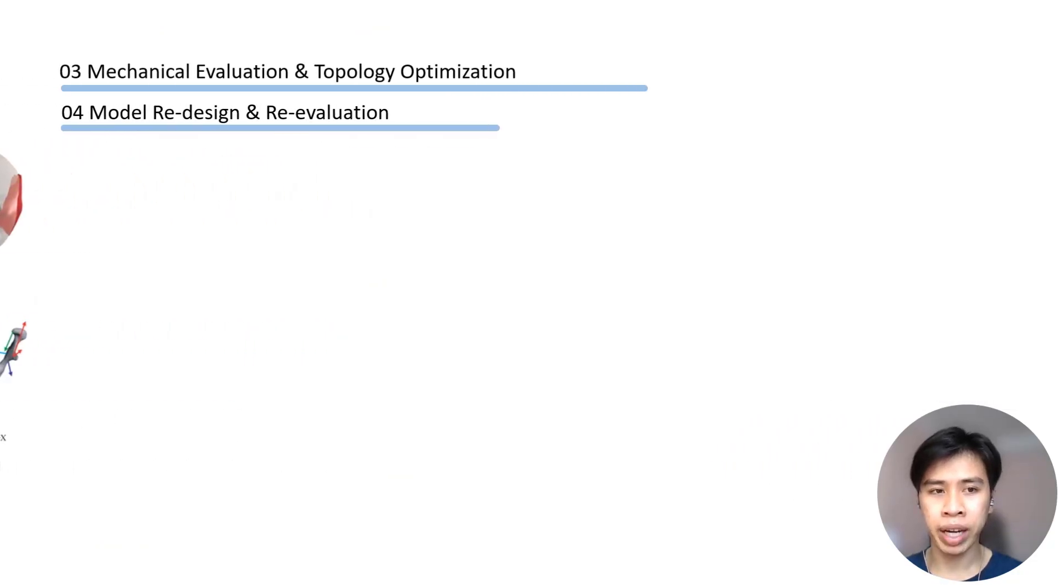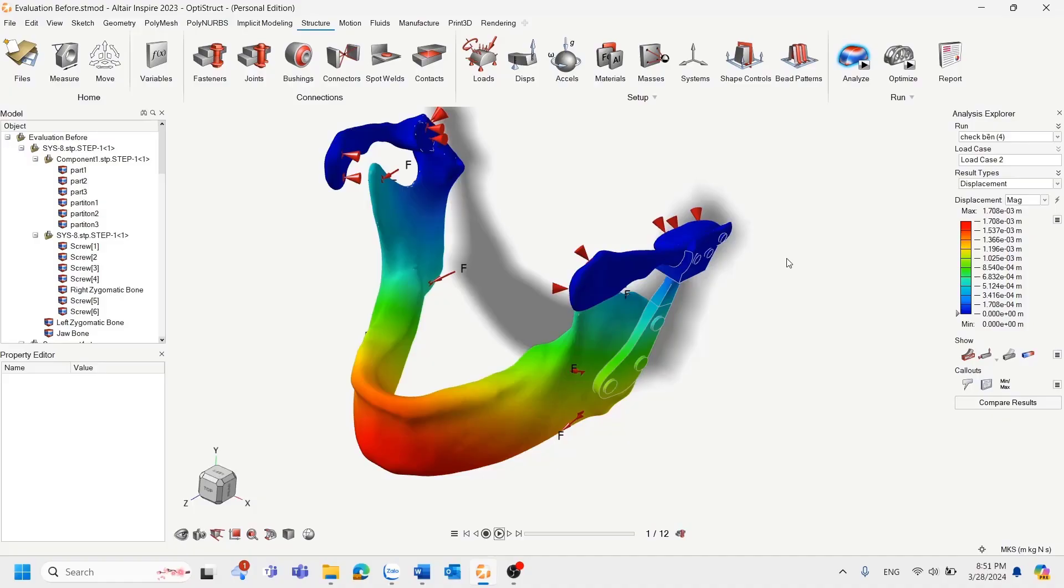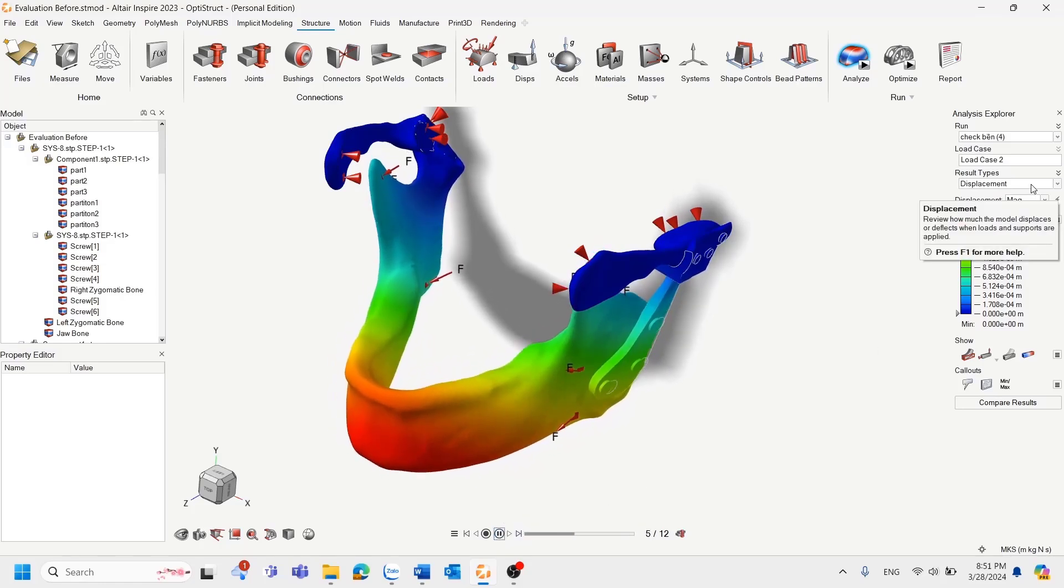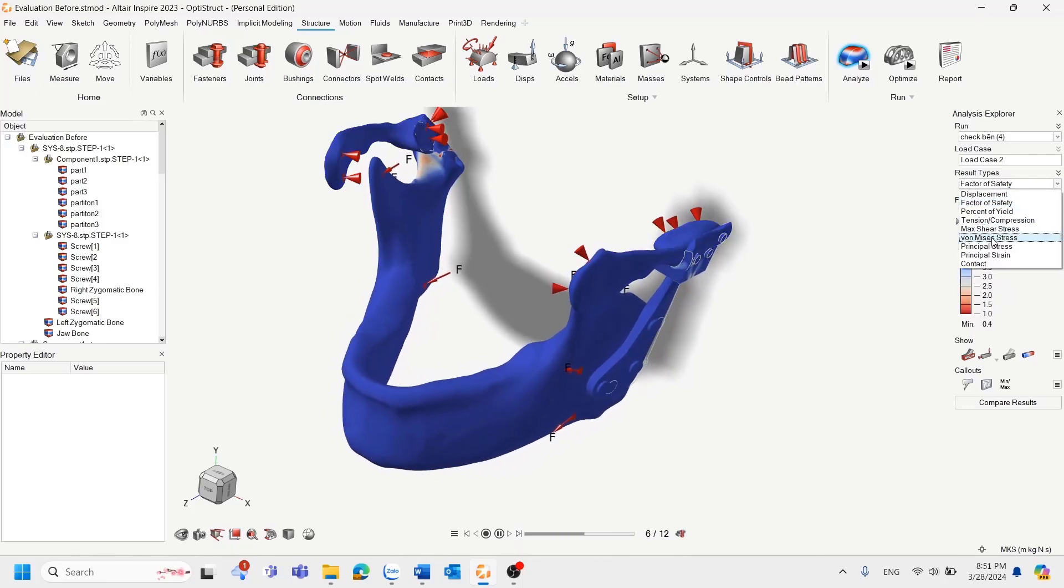In the next two sections are mechanical evaluation and topology optimization. We can do a model redesign and re-evaluation. This is the fun part. Stay tuned and I'm opening Altair Inspire right now. We have the results here. For those results, we can see the displacement of the model, the factor of safety of the model, and the von Mises stress distribution. You can also see the animation in this model. You can see that's the factor of safety and the von Mises stress distribution.